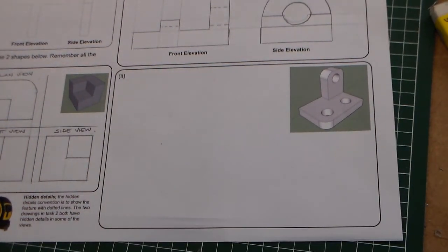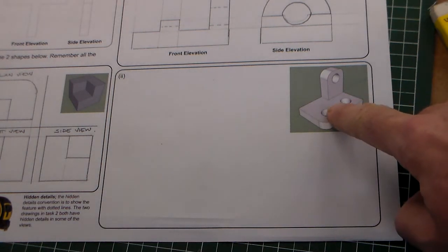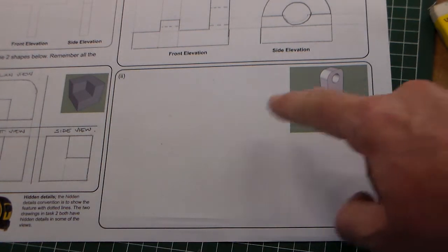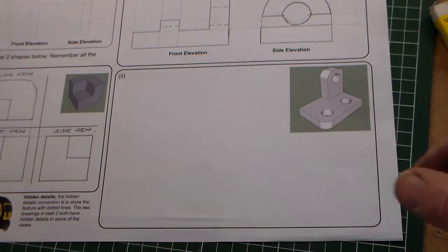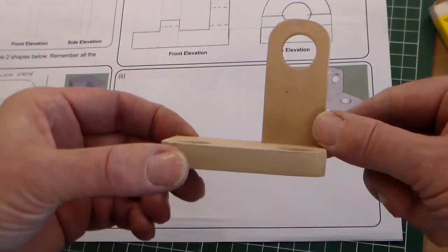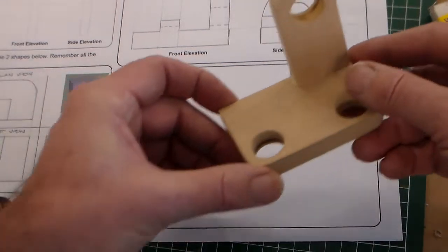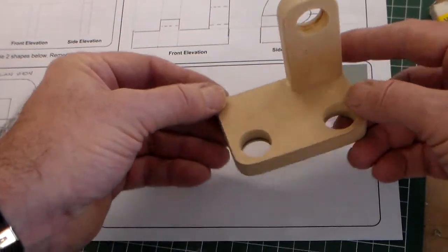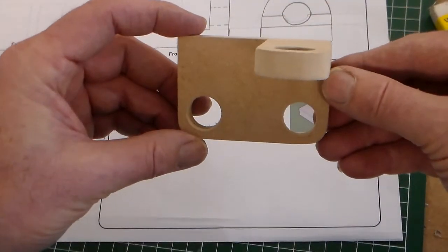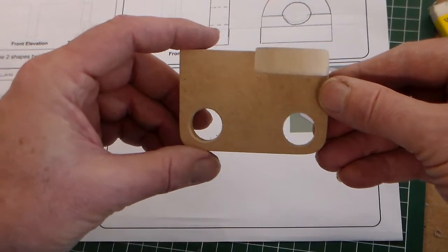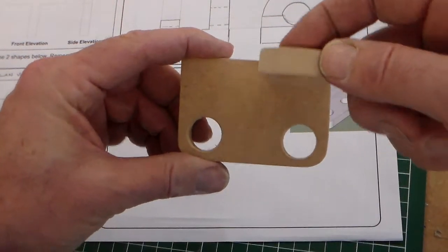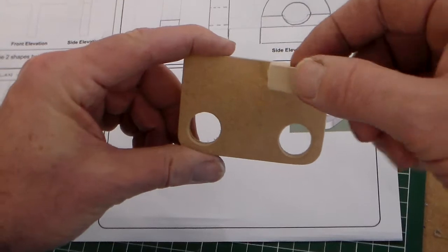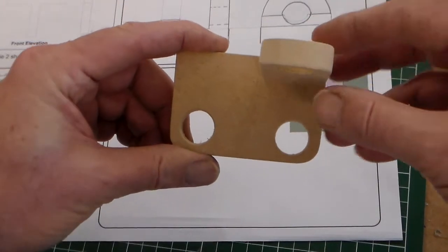Now this is the most challenging part, because we've got an object here that we need to draw, and we've got no guidelines or anything. So if we take a look at this representation of the object, and it's orientated like that, and if we look at it, we've got a plan view here. For the plan view, this hole here is hidden detail, so that will need to be represented by dotted lines.